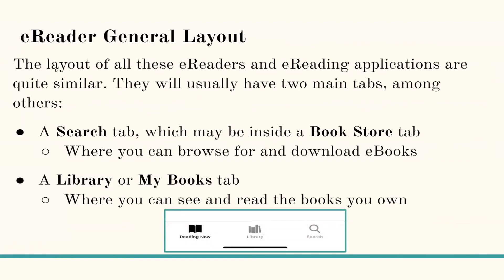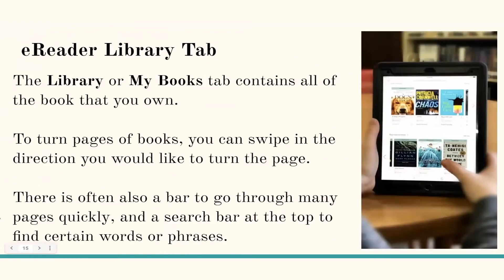The layout of all these e-readers and e-reading applications are quite similar. They will usually have two main tabs. There's a search tab, which may be inside a bookstore tab where you can browse for and download books. A second library or 'My Books' tab will probably be available where you can see and read your books. Within the library, you can swipe to turn pages, and there's often a quick bar to go through many pages quickly and a search bar to find certain words or phrases.